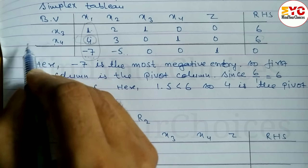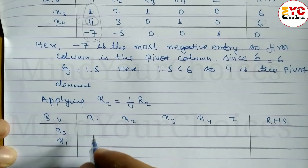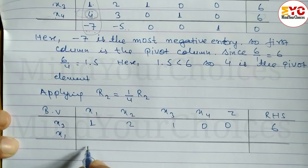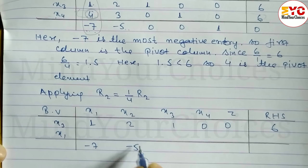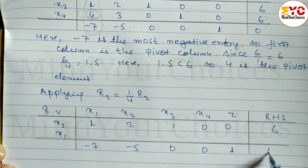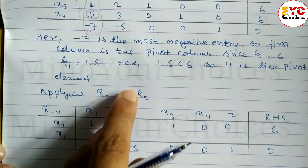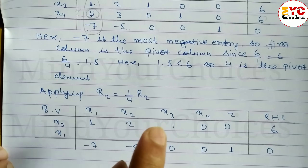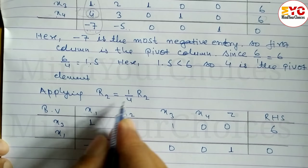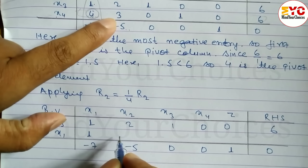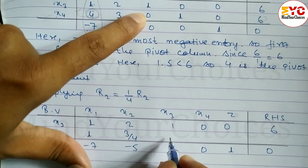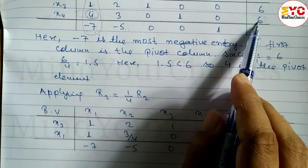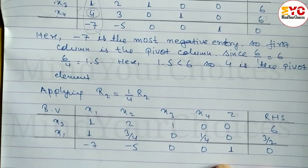We apply the row operation R2 equals (1/4) R2 to make the pivot element 1. In the basic variables column, x4 is replaced by x1. The first row and last row remain the same: 1, 2, 1, 0, 0, 6 and minus 7, minus 5, 0, 0, 1, 0. The new second row becomes: 1, 3/4, 0, 1/4, 0, 3/2.